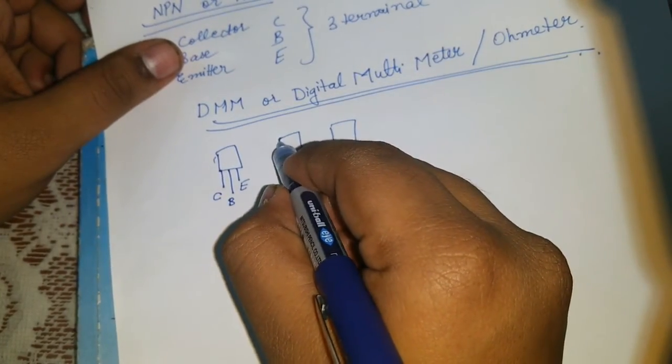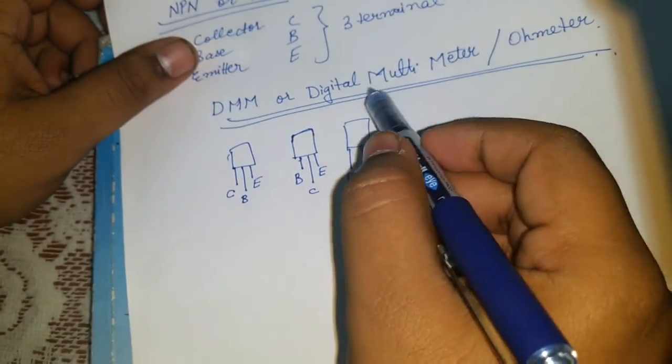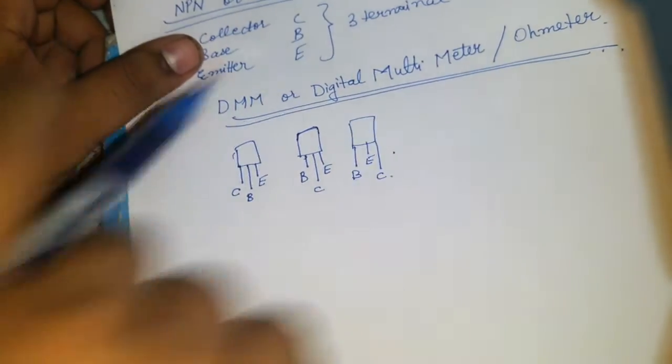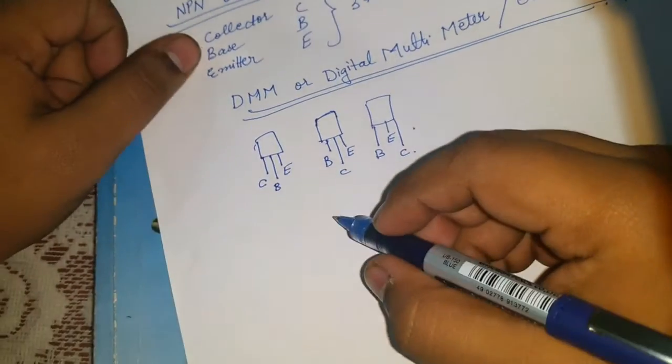We don't know where the base is and emitter is or collector is. So that is why we find using a digital multimeter or an ohm meter. Okay, so let's get started.